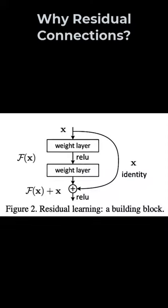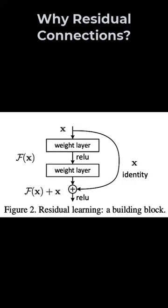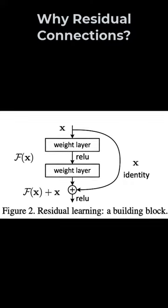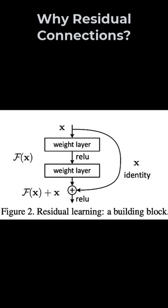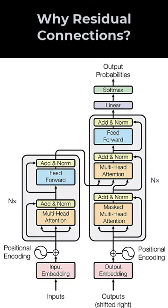Residual connections or skip connections allow information to bypass layers and prevent it from diminishing to zero, allowing information flow to be unimpeded. Hence training really deep neural networks becomes tractable with residual connections.